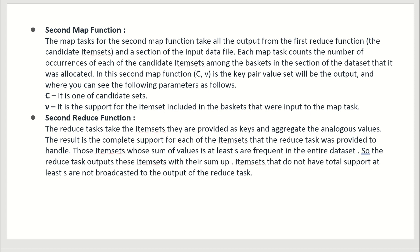Now the second map and second reduce functions are performed. In the second map function, each map task takes the output from the first reduce task and a chunk of the total input data file — input from both the first reduce function and the input file. All candidate item sets go to every map task, which counts occurrences of each candidate item set among the baskets in the input chunk. The output is a (c, b) key-value pair where c is the candidate frequent item set and b is the support for that item set among the baskets in the chunk.